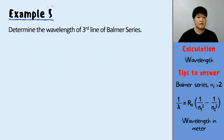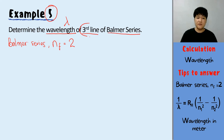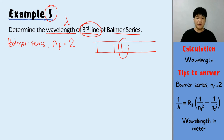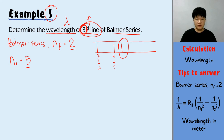Let's try an example: determine the wavelength of the third line of the Balmer series. The Balmer series means N final must be N equals 2. For the third line, N initial is 3 plus 2 equals 5. The first line is 3 drop to 2, second line 4 drop to 2, third line 5 drop to 2. We are calculating wavelength, so the formula is 1 over lambda equals Rh times 1 over N1 squared minus 1 over N2 squared.